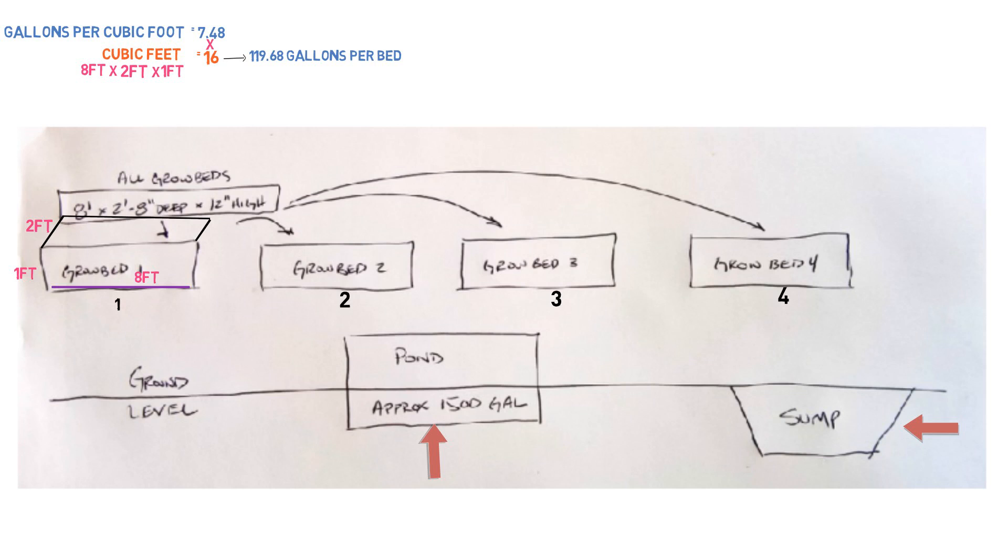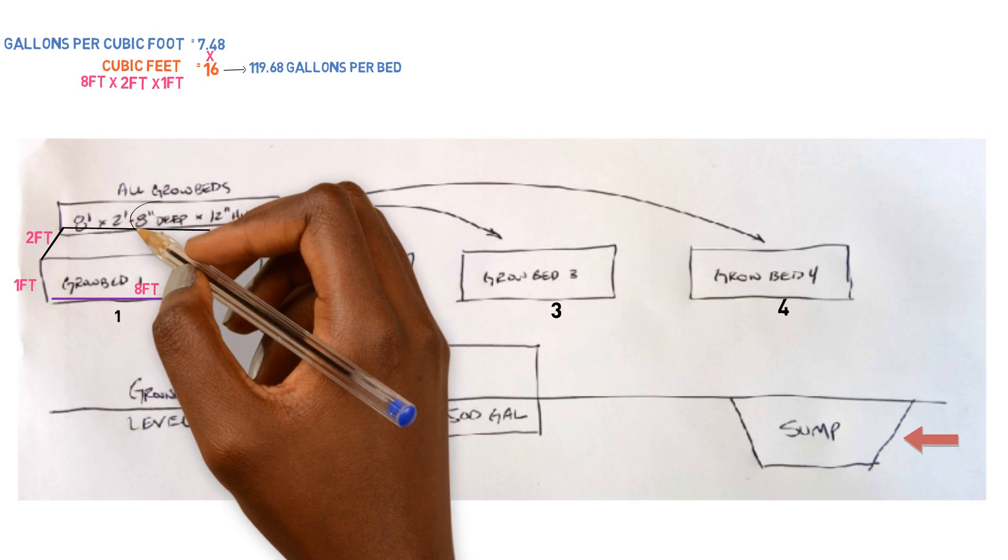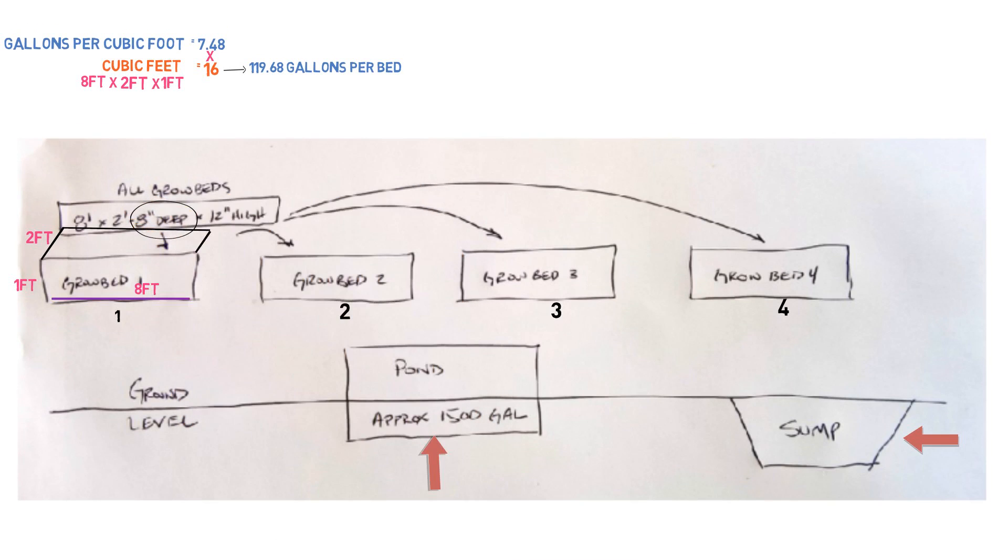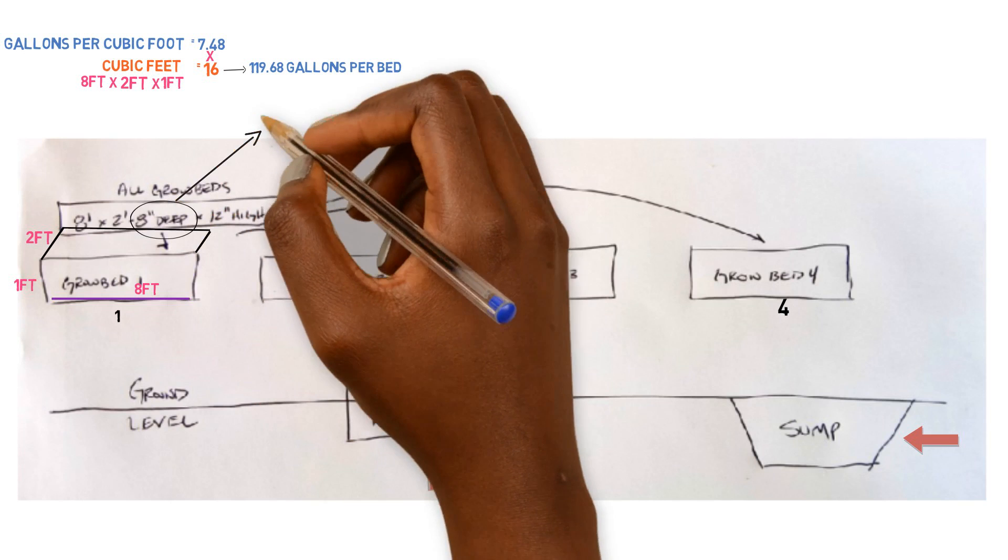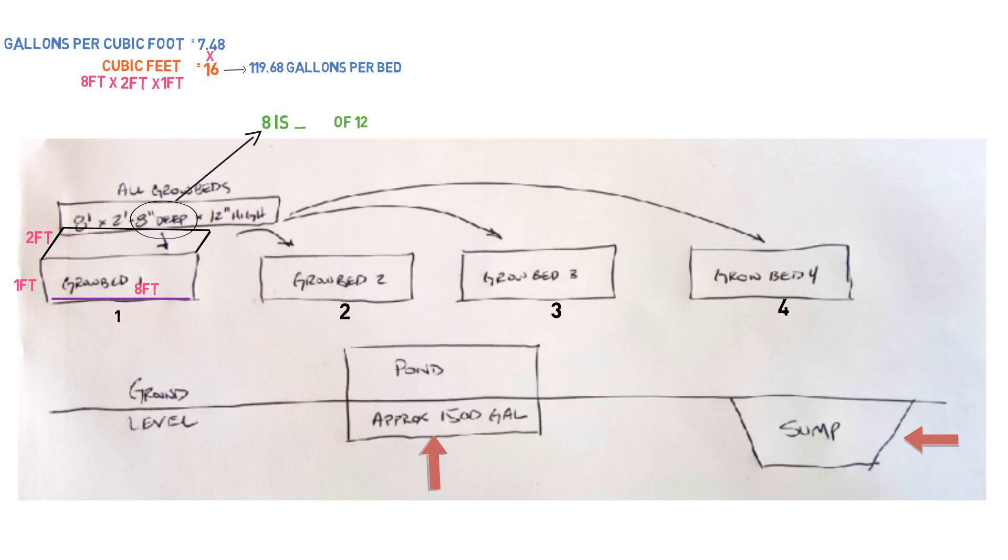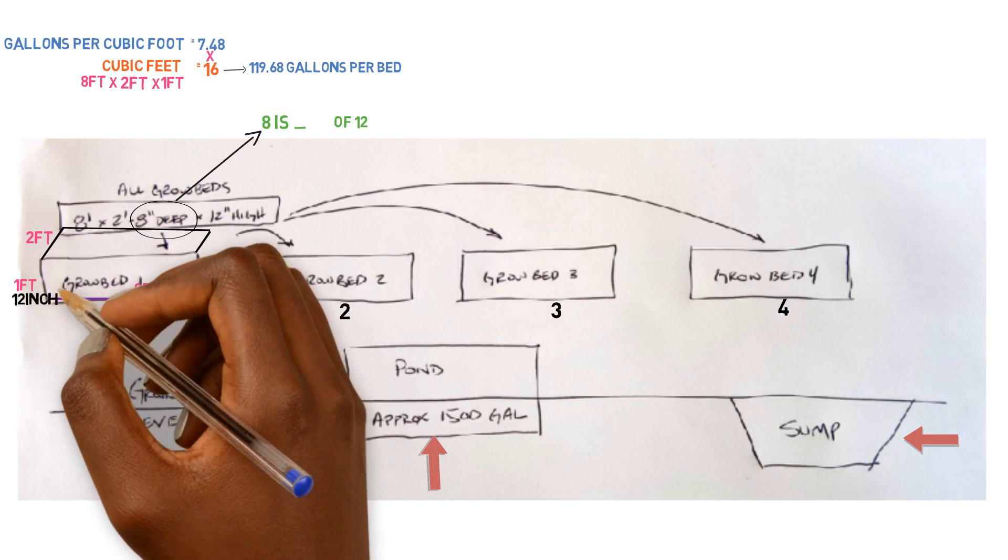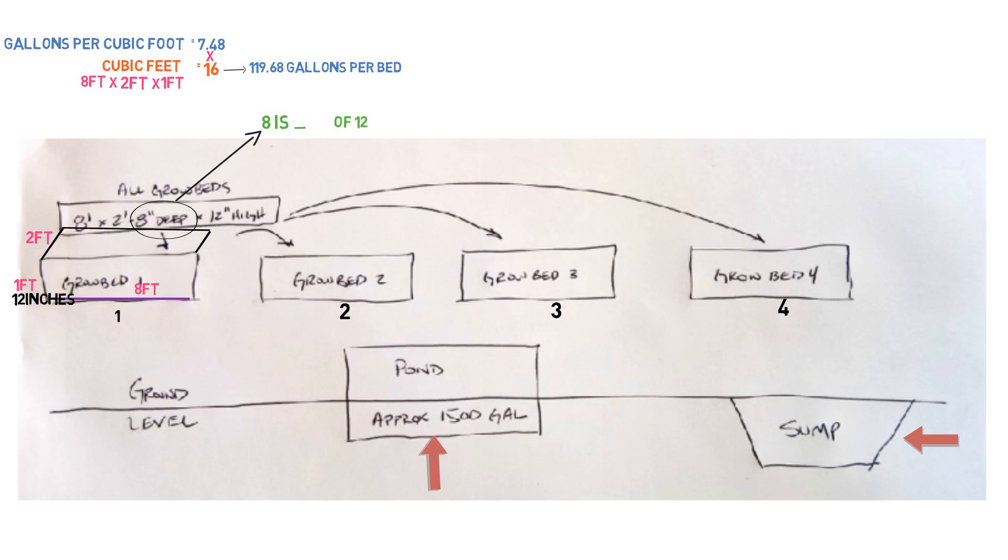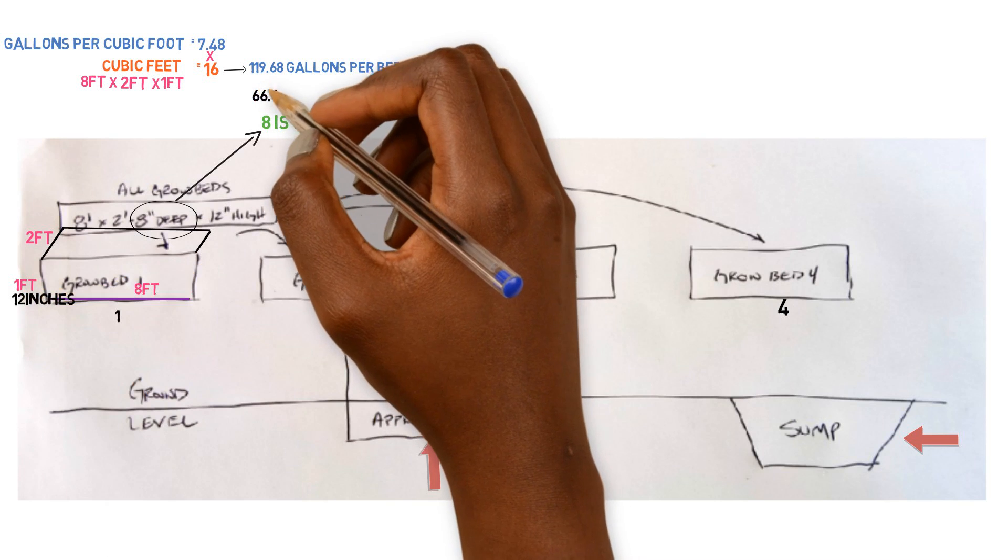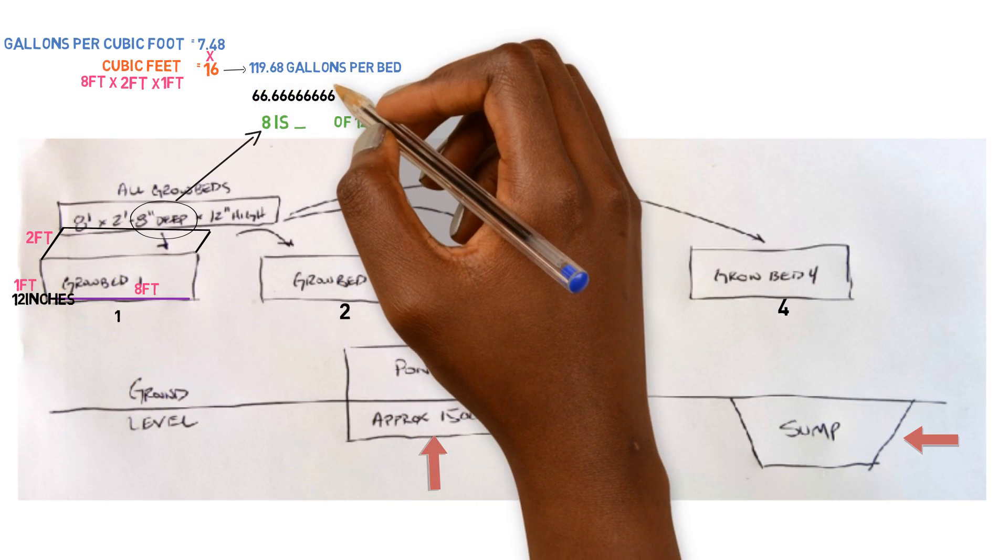So here's the kicker. The kicker is he doesn't want it filled up all the way. Steven, you don't want to fill it up all the way. You said you wanted an eight inch depth. That's how much media you're going to have filled up inside of each one of these beds. So in order to calculate how much water we have at an eight inch depth, we need to answer, eight is what percentage of 12 because there's 12 inches inside of the bed. So we want eight inches of those to be filled up. So eight is what percentage of 12 and that is 66.666666. And it keeps going.